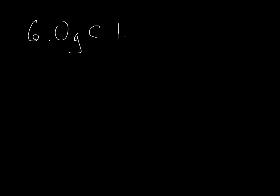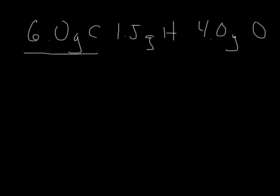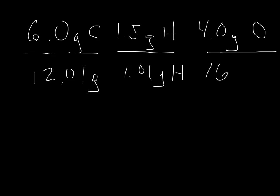So we're going to take the 6 grams of carbon, the 1.5 grams of hydrogen, and the 4 grams of oxygen, and convert each one to moles by dividing by their molar mass: 12.01 grams of carbon per mole, 1.01 grams of hydrogen per mole, and 16.00 grams of oxygen per mole. So 6 divided by 12 is 0.5, 1.5 divided by 1.01 is about 1.5, and 4 divided by 16 is 0.25. That gives a ratio of 0.5 moles of carbon to 1.5 moles of hydrogen to 0.25 moles of oxygen.